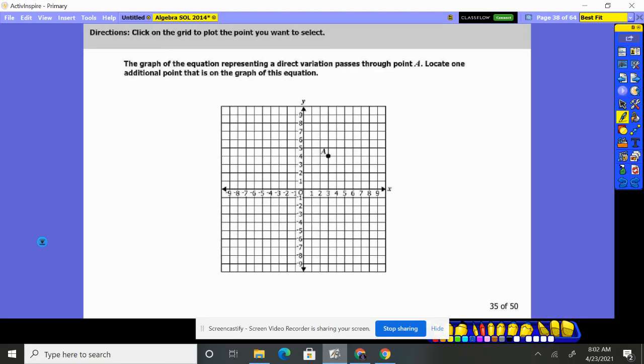The graph of the equation representing direct variation - what does that mean? It basically means you have an equation: y equals some value here, we call the k value, times x. Basically x is being multiplied by a constant value each time, whether that's a 2 or 3 or 4 or 5.